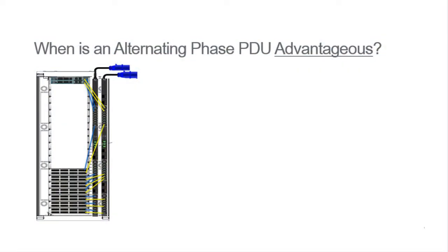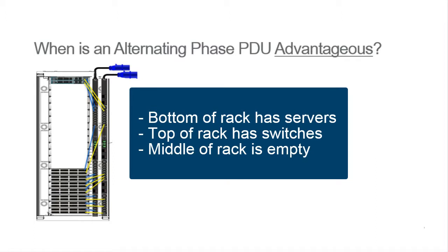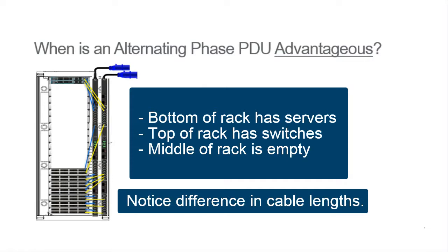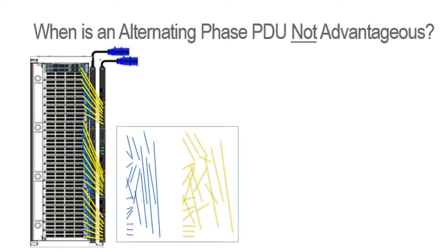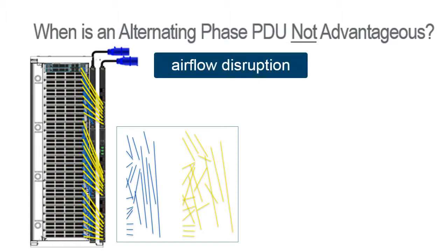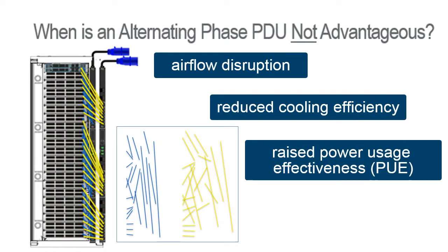So when is an alternating-phase PDU right for you? When the initial deployment is not a fully populated rack. For example, the rack shown here was initially deployed with the bottom third populated with servers. The switches are at the top of the rack, and the middle of the rack is empty. When using a conventional PDU, the initial cabling requires two to three different lengths of cable to achieve a balanced load. Over time, as more equipment is added, the cabling can become very messy, with lots of cable crisscrossing and different cord lengths in use, because each device added has to be connected to the phase that is out of balance. An installation like this can cause airflow disruption, reducing cooling efficiency, and raising power usage effectiveness, or PUE.